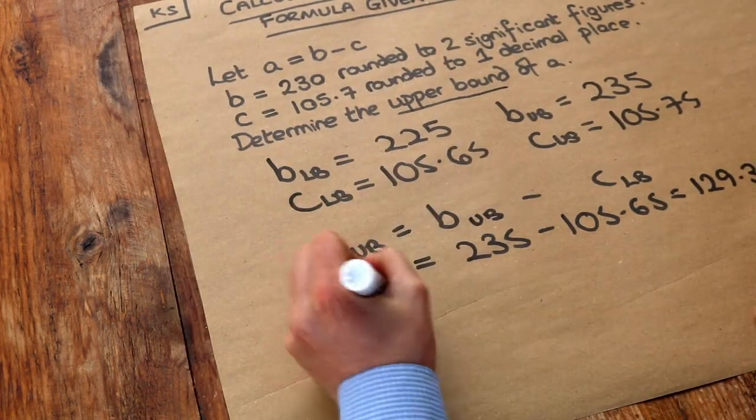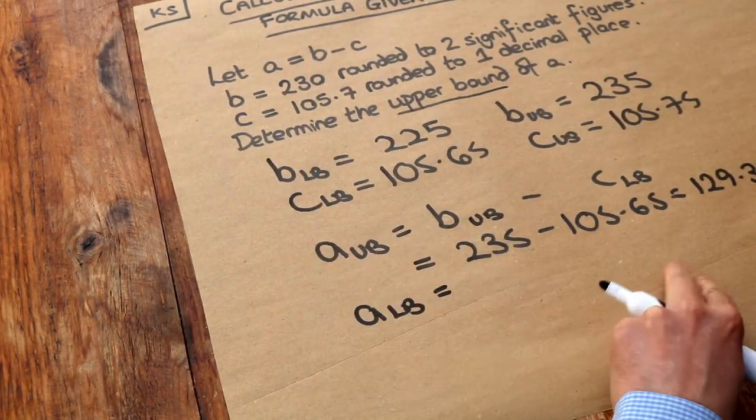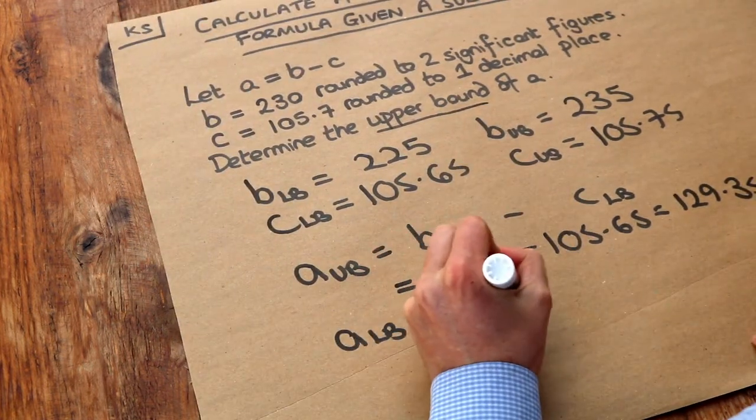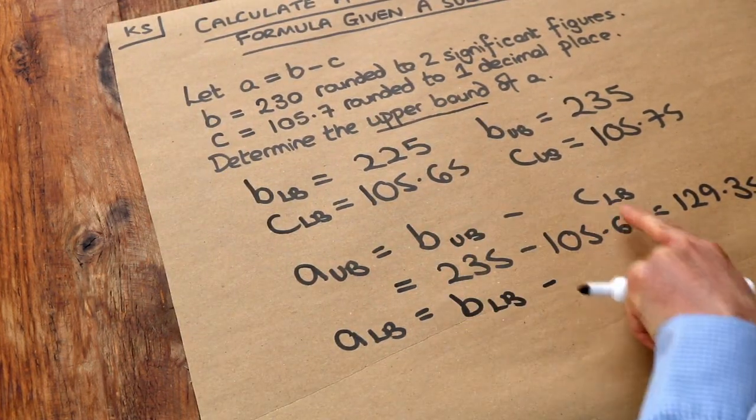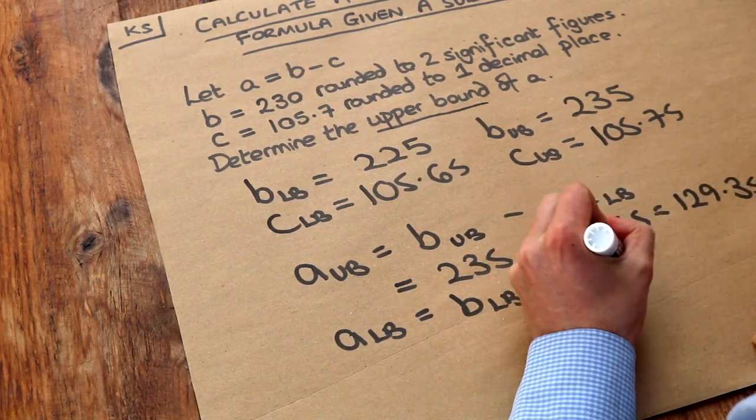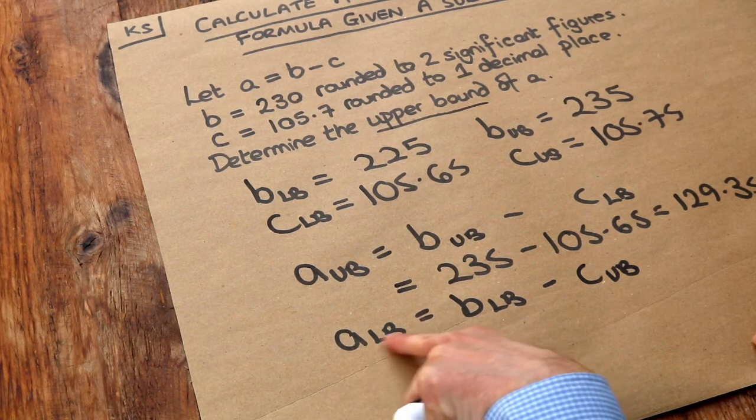Let's work out the lower bound as well even though the question didn't ask for it. Well we should start with a small number for B so the lower bound and then we want to subtract a big number so the upper bound of C because the bigger the number we subtract the smaller the result we get.